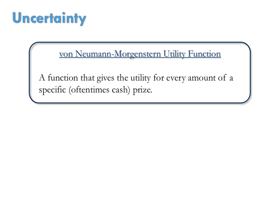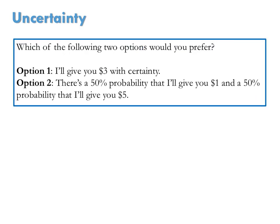A Von Neumann-Morgenstern utility function, or VNM utility function for short, reflects a consumer's preferences for risk. To see this, consider the following exercise.